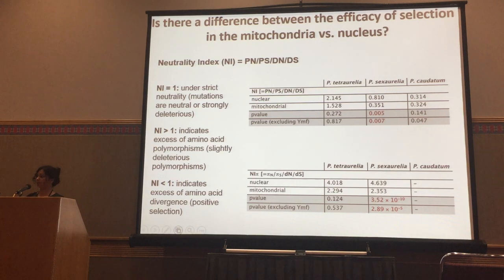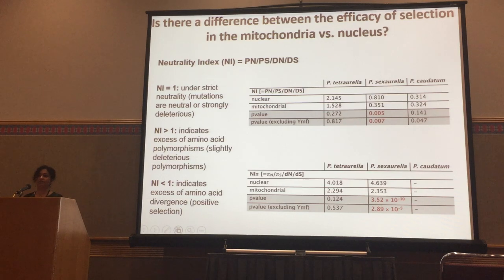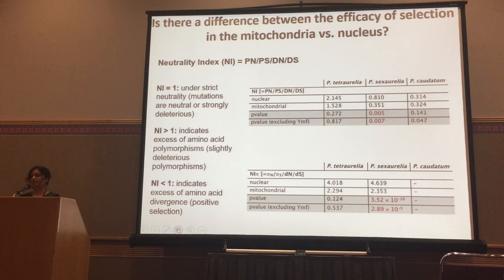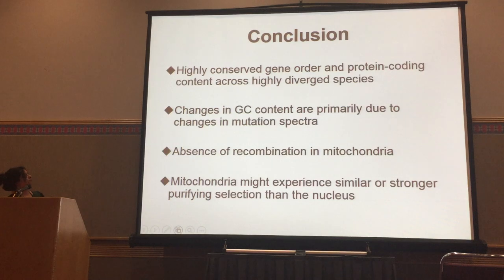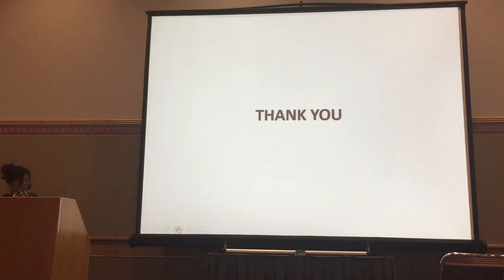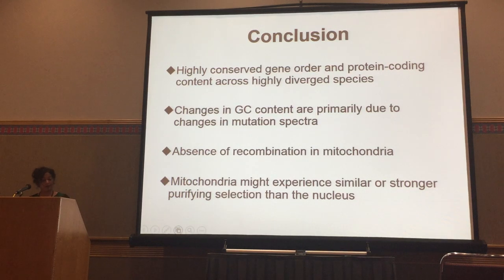One reason proposed is a difference in the distribution of fitness effects, but we should be careful because this is not an entirely fair comparison — many genes in the mitochondria are highly conserved across all eukaryotes, so these results should be interpreted with some caution. Despite that, the main conclusions are: mitochondrial genomes are highly conserved across very highly diverged species; GC content changes seem to be due to mutation; and mitochondria seem to experience either similar or stronger purifying selection than the nucleus.